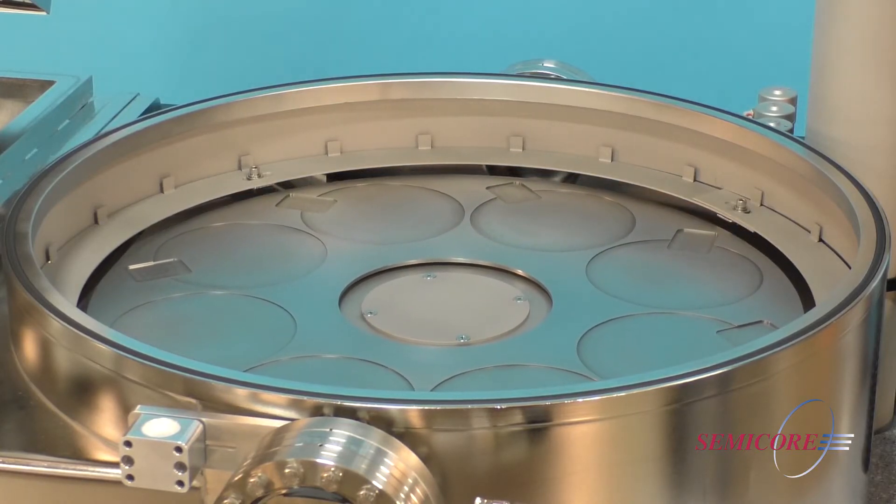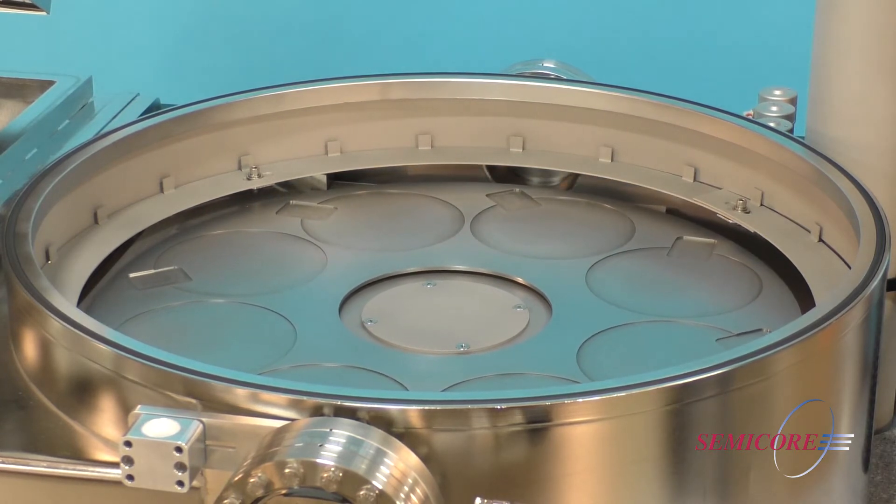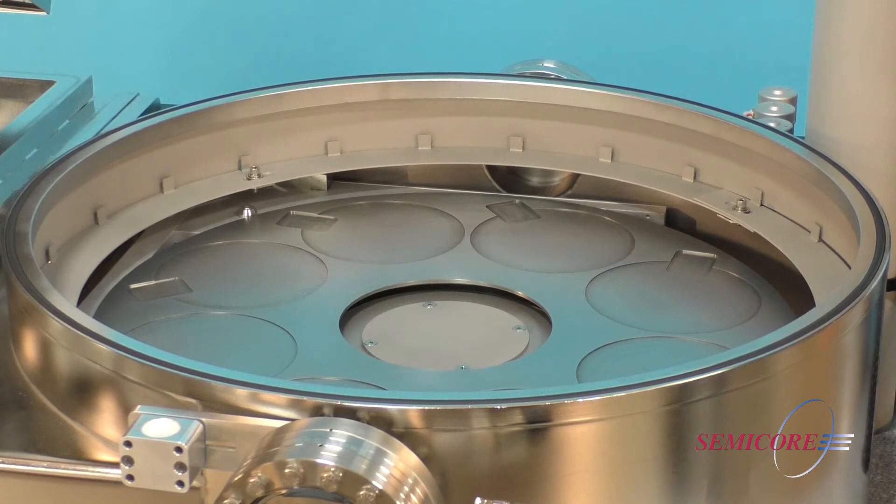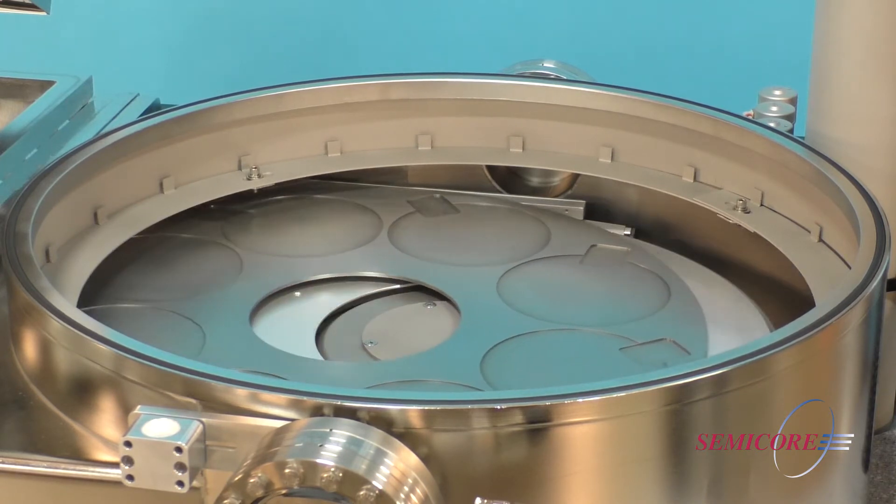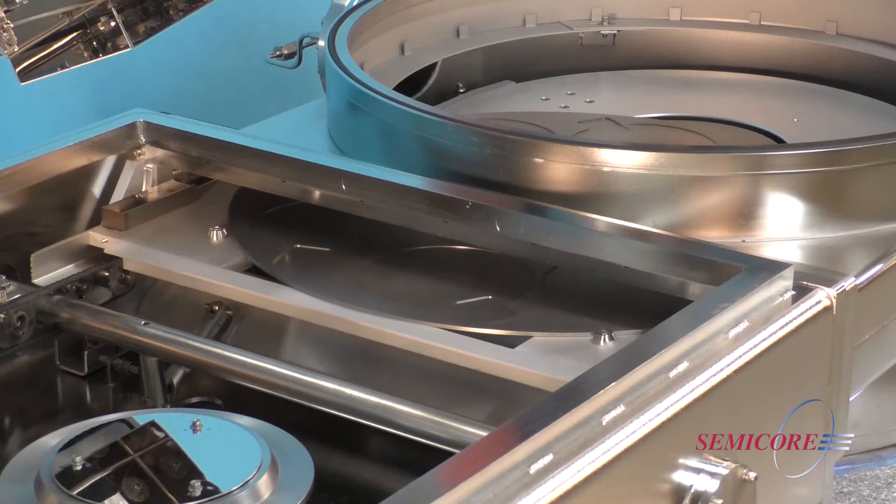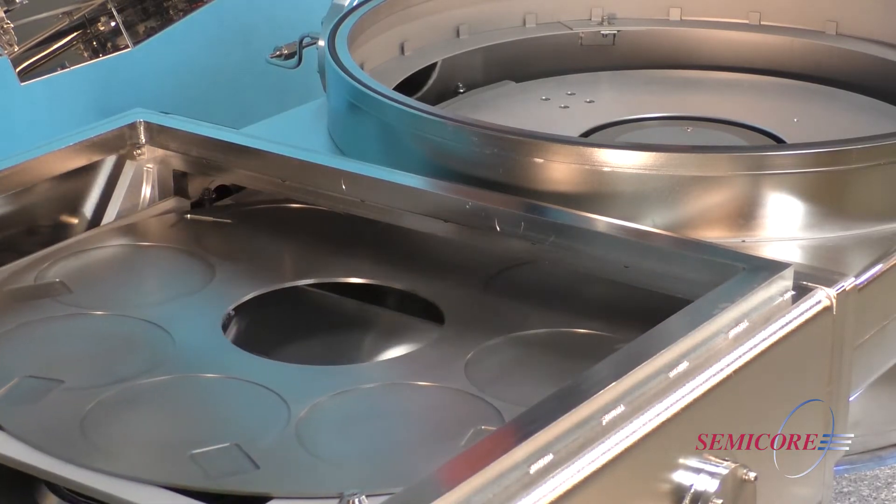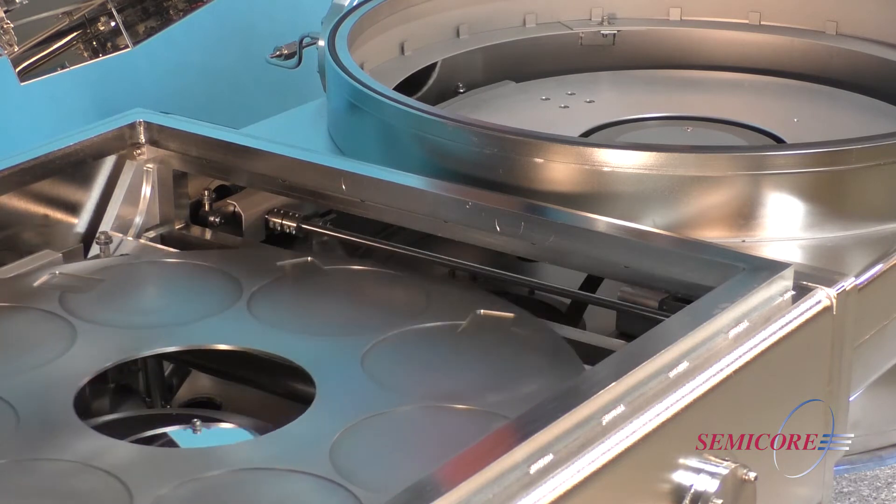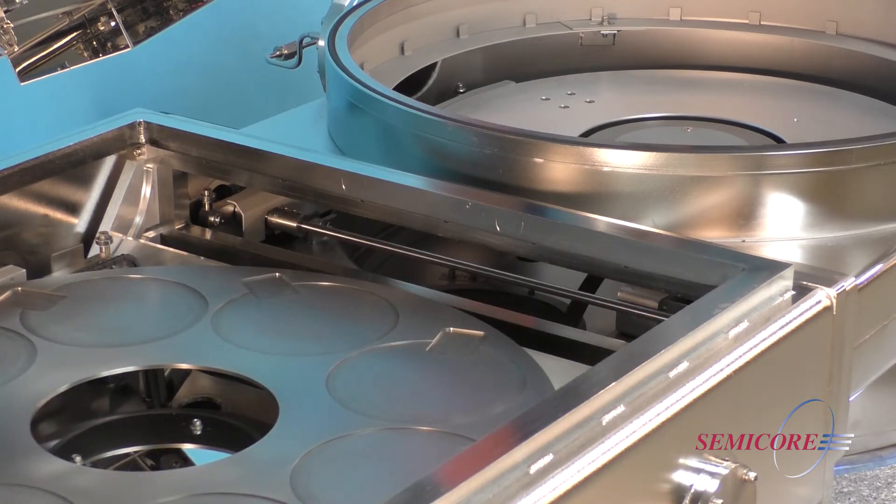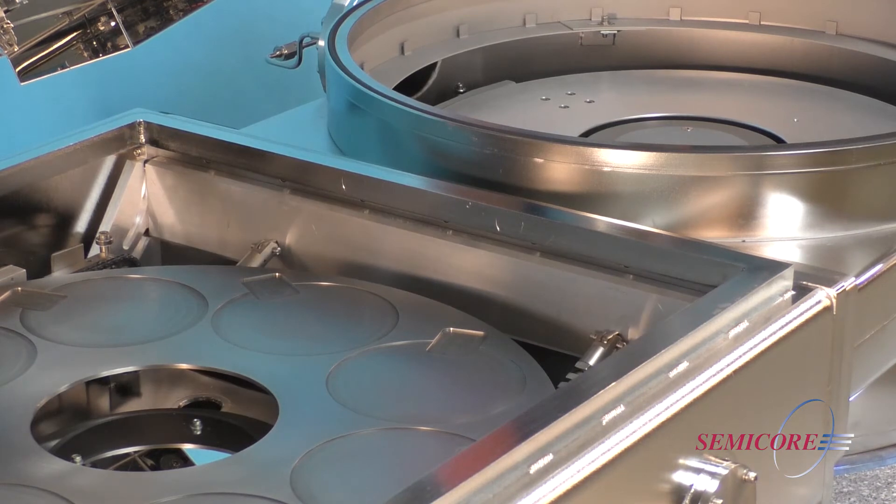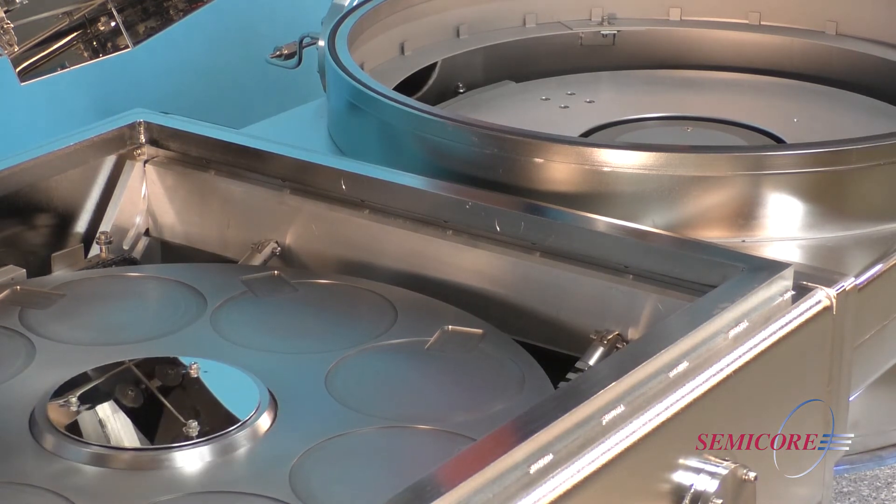The substrate table lowers the pallet onto the carrier. The carrier transports the coated substrates back into the load lock chamber. The chamber isolation door closes, and the elevator lifts the pallet to deliver the product and be reloaded.